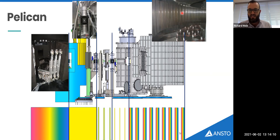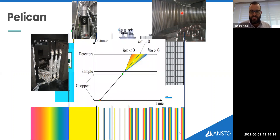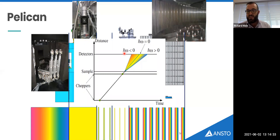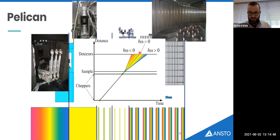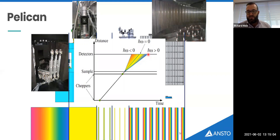Getting rid of 99% of the neutrons allows us to use this massive detector to span a huge range of Q and omega space simultaneously. On a time-distance diagram, if the sample is warm it can transfer energy to a neutron — the neutron speeds up, and on Pelican that means up to a thousand meV can be transferred. Elastic line neutrons just change direction. Neutrons can also slow down when the sample is excited to an excited state — and that's the process we measure.